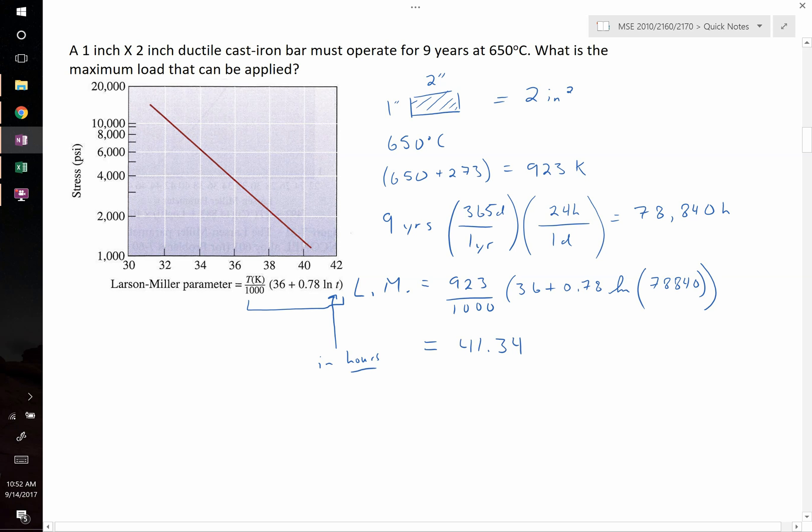Now we look at our Larson Miller parameter plot. On the x-axis it shows the Larson Miller parameter going between 40 and 42. This would be about 41.3, or in other words right about where this line intersects, right there.